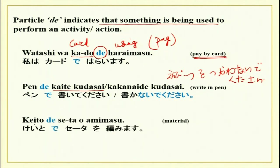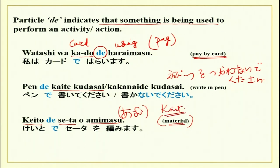Keito de seta wo amimasu. Keito is wool — with the help of some material, I make a sweater. Kiji de doresu wo tsukurimasu — with the help of cloth, I make a dress. The verb aamu means to knit in dictionary form. So keito de, with the help of keito, I am able to make a sweater — seta.